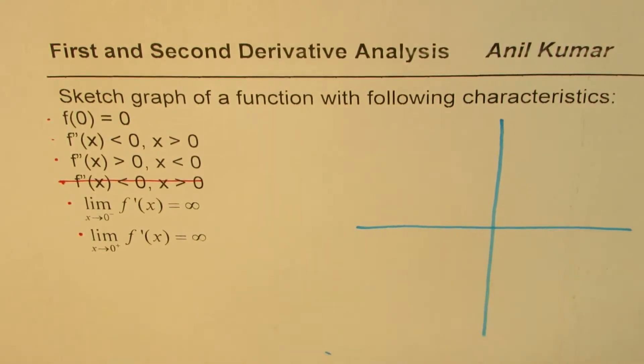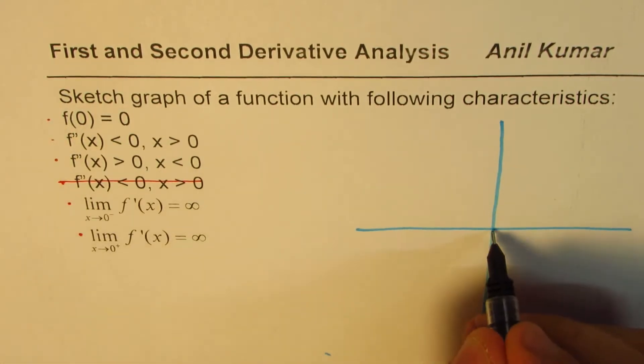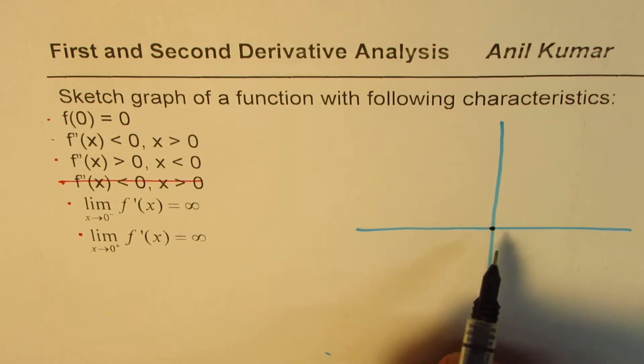So let's say this is our graph paper, we'll sketch a rough graph. Let's analyze each condition. f(0) is 0 that means origin is part of the graph, the function, right.